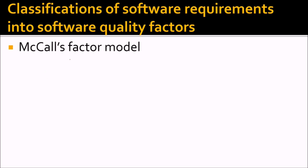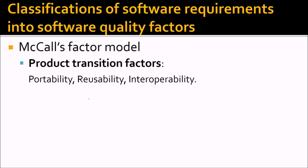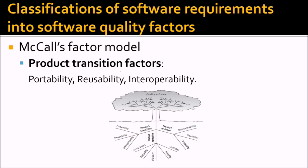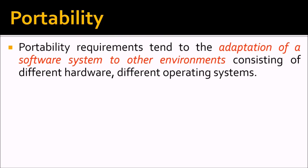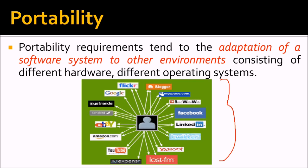The product transition factors are portability, reusability, and interoperability. Portability requirements deal with the adaptation of a software system to other environments consisting of different hardware and different operating systems. We want the software to work for those operating systems and hardware platforms within the defined scope.